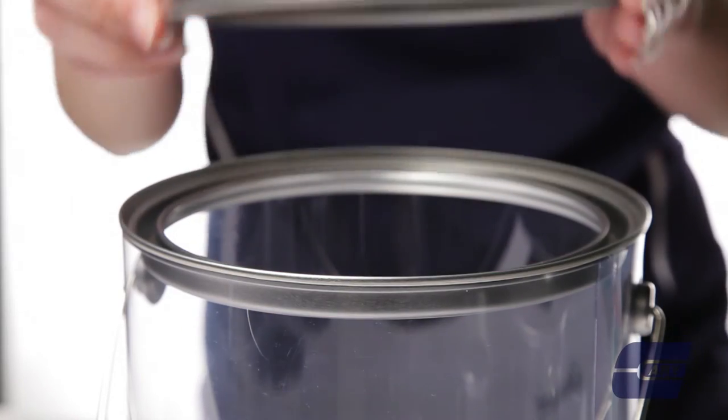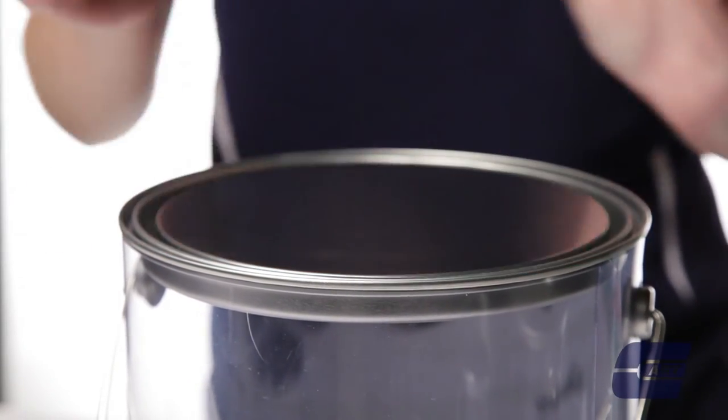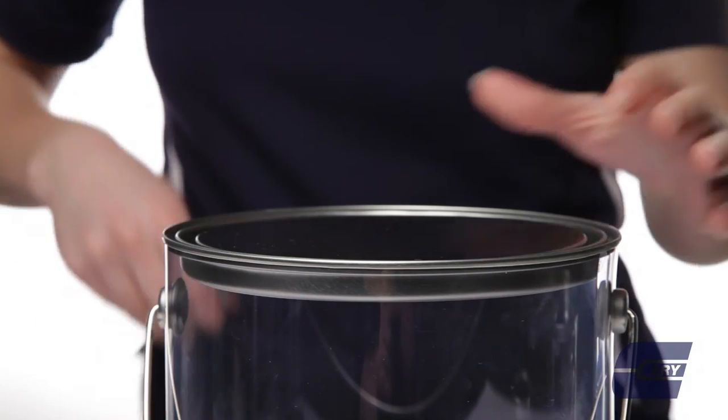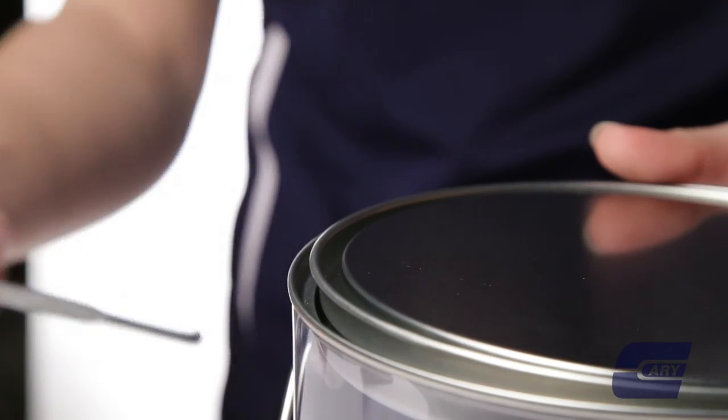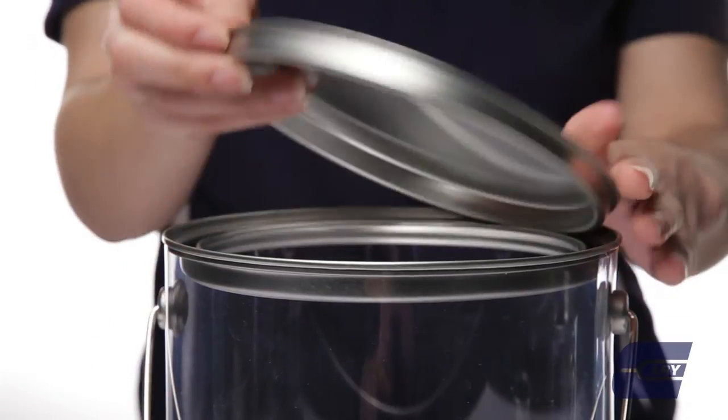The lid is secured to the container by applying pressure by hand. To open the paint can, simply use a paint can opener to pop the lid off. The lid, bottom plate, and handle are made of tin.